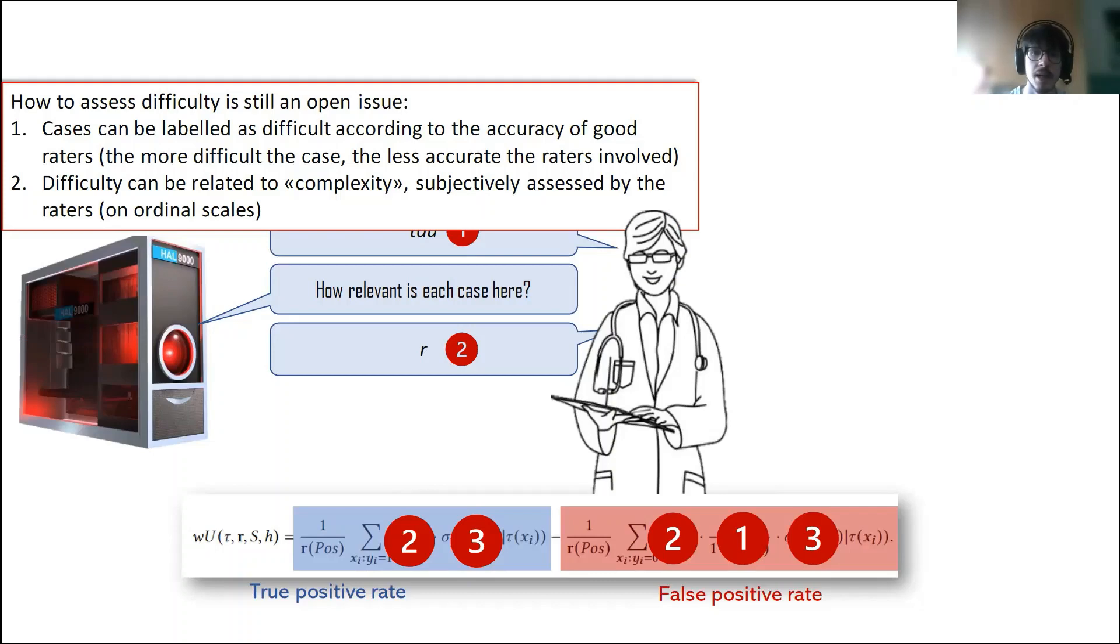Also in this case, there can be many different ways in which we can collect information about relevance. For example, we can label cases as relevant according to the accuracy of raters. For example, a case on which all or most of the raters error could be considered most relevant because we need very much the help of the artificial intelligence system in this case. Another way is to directly ask the decision maker to give a subjective assessment of the relevance of the cases.